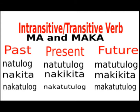Examples of transitive verbs using ma: makita, makain, maalala, makuha, marinig, mabili, masunog, mabasa, mabasag.